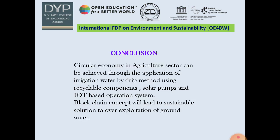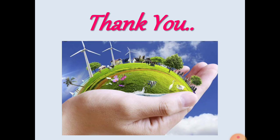We can conclude that a circular economy in the agriculture sector can be achieved through application of irrigation water by the drip method using recyclable components, solar pumps, and IoT-based operation systems. The blockchain concept will lead to a sustainable solution to overcome the exploitation of groundwater. Thank you.